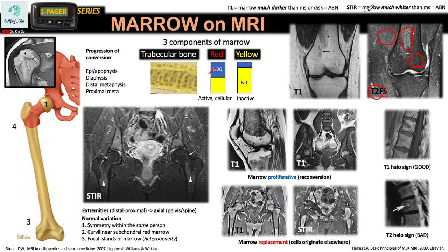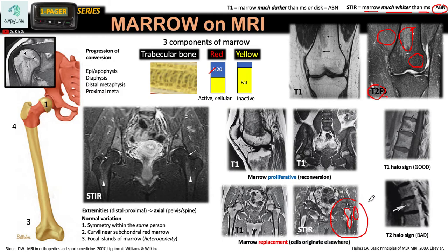If you get a marrow signal that is much whiter than the adjacent muscle, it is already abnormal. Think about it — if you have red marrow that is too cellular and too vascular, with an increased number of cells and cytoplasm, you will get a marrow signal that is too white. A red marrow that is much whiter than the adjacent muscle is abnormal.